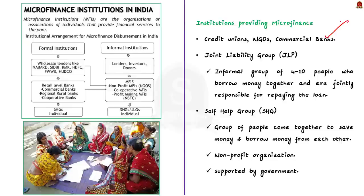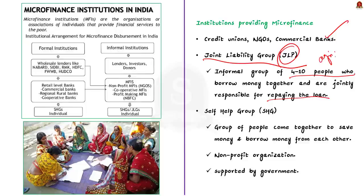There are basically four types of groups that provide microfinance in India. The first is the Joint Liability Group (JLG): a small informal group of four to ten people who borrow money together and are jointly responsible for repaying the loan, typically used for agricultural purposes or small businesses. The second is the Self-Help Group (SHG): a group of people with similar economic backgrounds who come together to save and borrow money from each other. SHGs are technically non-profit organizations and are often supported by the government.